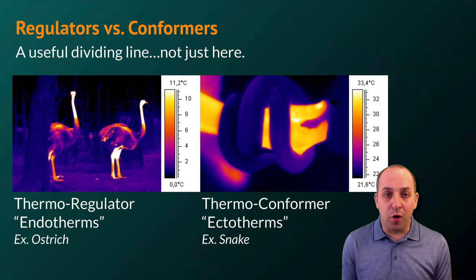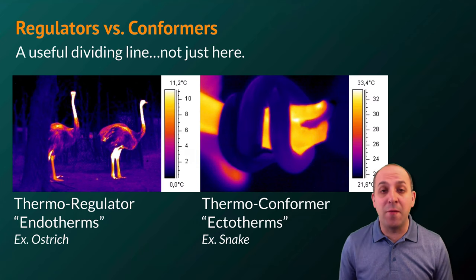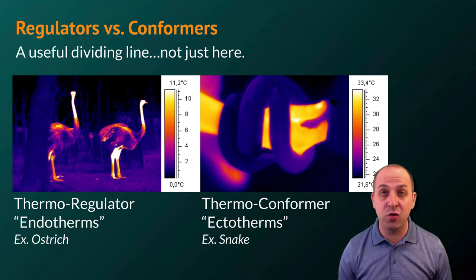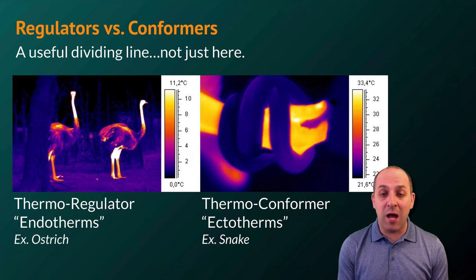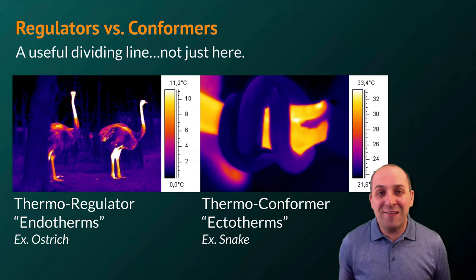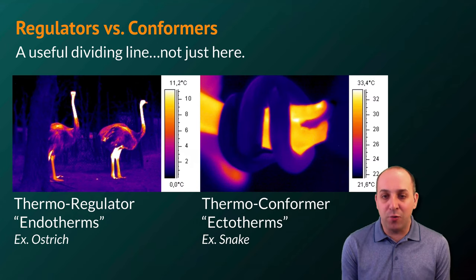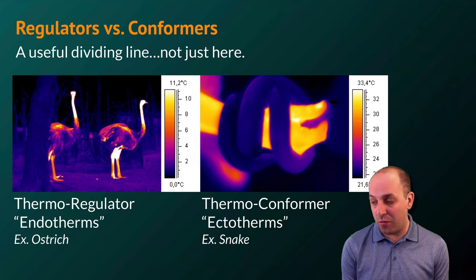Thermoconformers are what we would call ectotherms, and these are organisms that do not spend much energy to maintain their internal temperature, and so as a result, basically are the temperature of their ambient environment. A good example of this is the snake, which you can actually see in this picture as the dark object being held by the human. Notice that the endothermic human's internal temperature is considerably higher than that of the snake. That's a great example of the difference between ectotherms and endotherms.